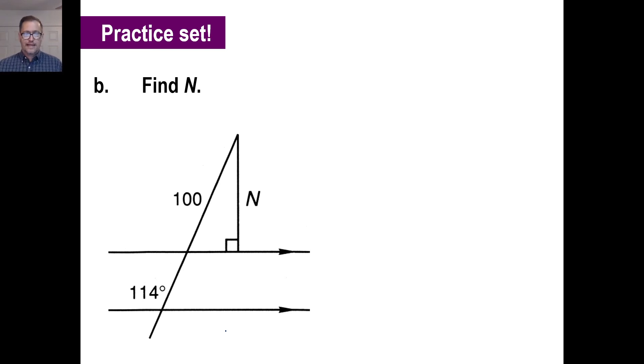They want us to find N, which means we're going to have to find this angle right here at the top right. Well, if this is 114 degrees and these are parallel and that's a transversal, this is going to be 66 degrees because it adds up to 180, which means this will be 66 degrees as well, right there.